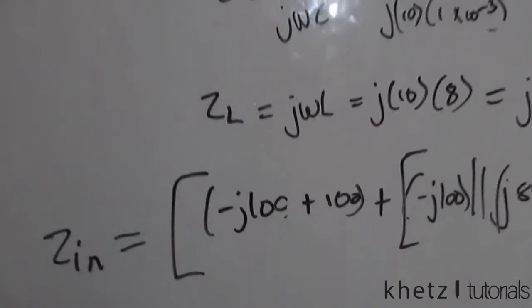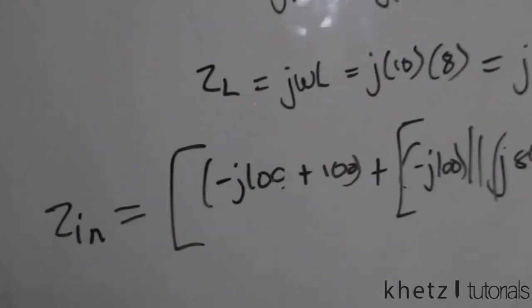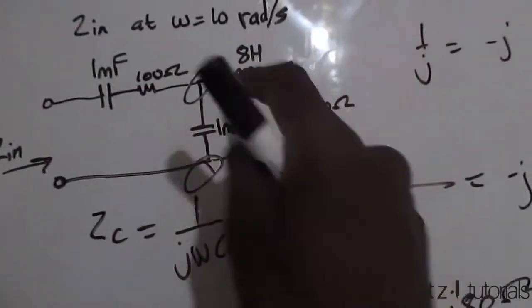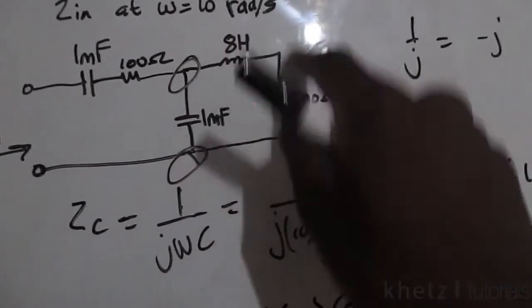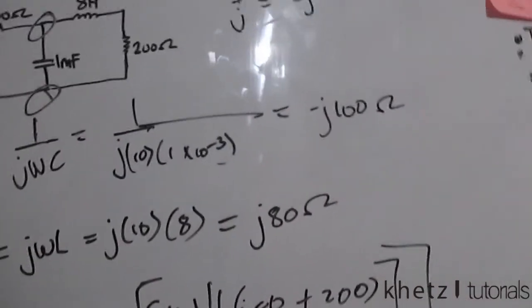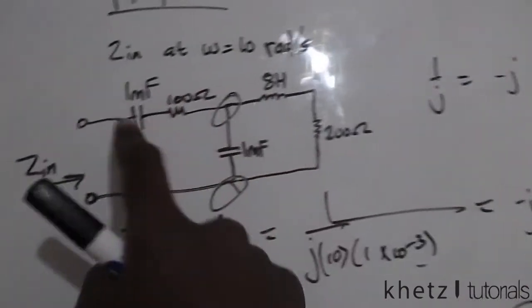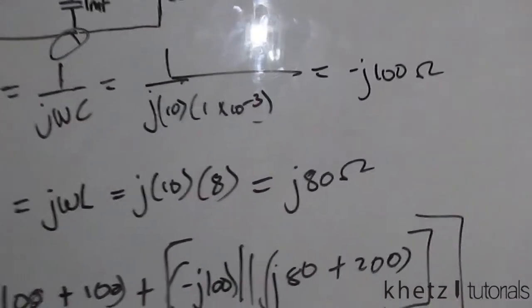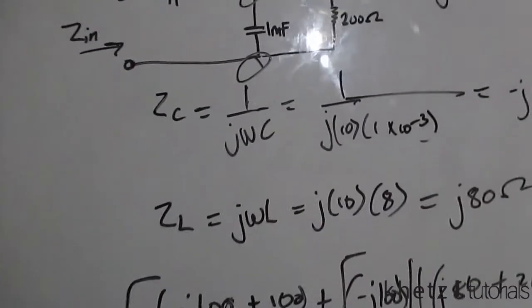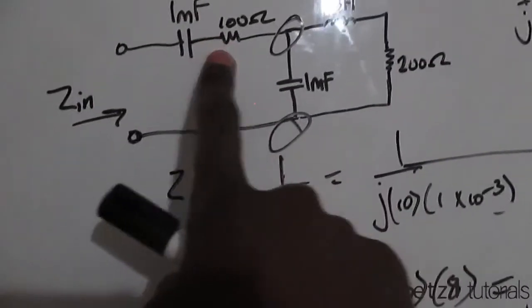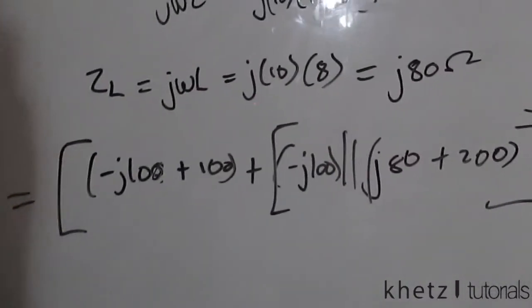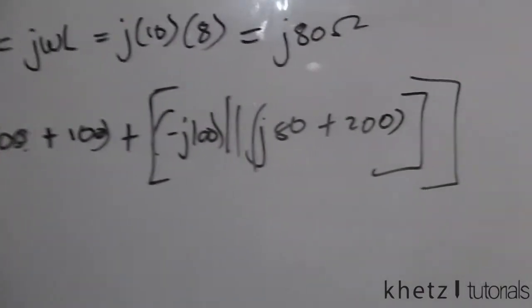The first part has elements in series, and the combination of that is in parallel with the capacitor. That parallel connection is then in series with the remaining elements, which is why we add the parallel combination to the other series combination we have.